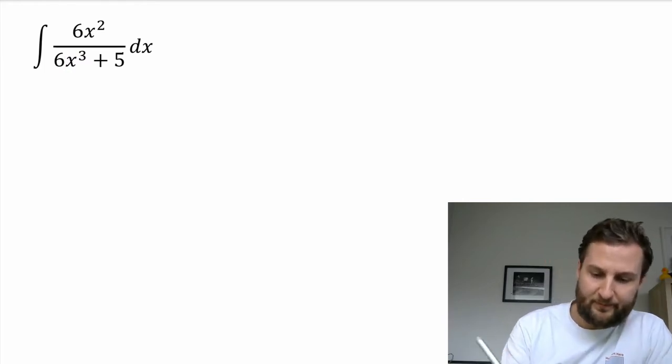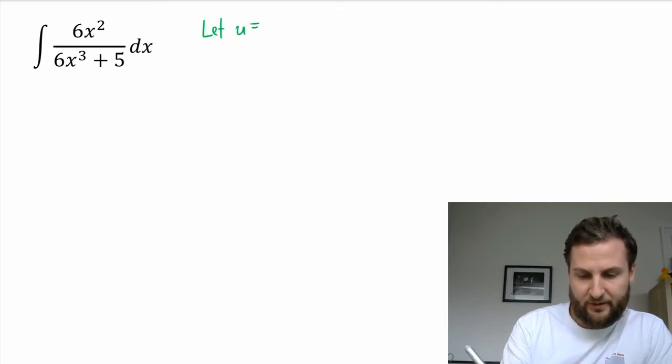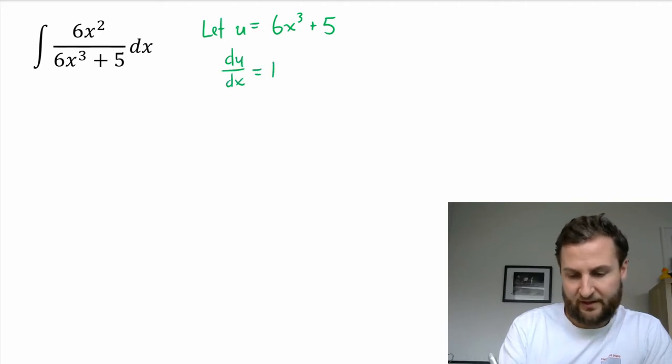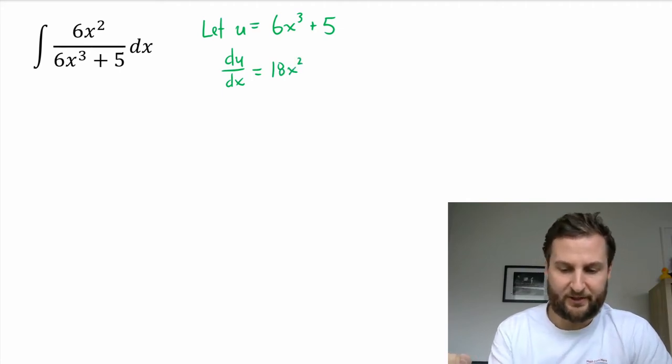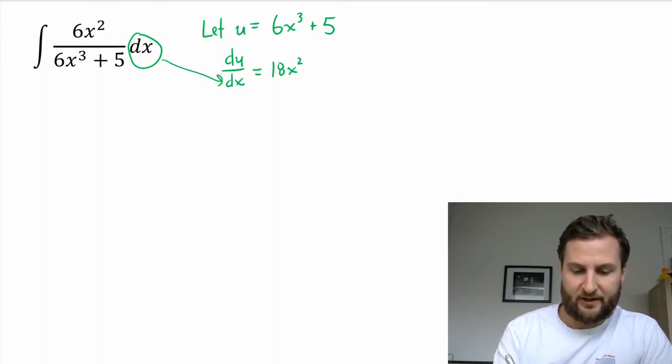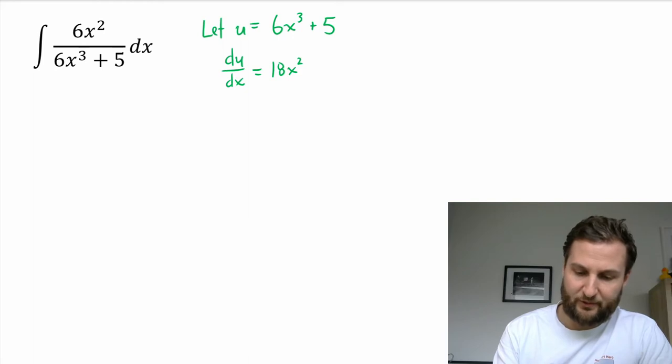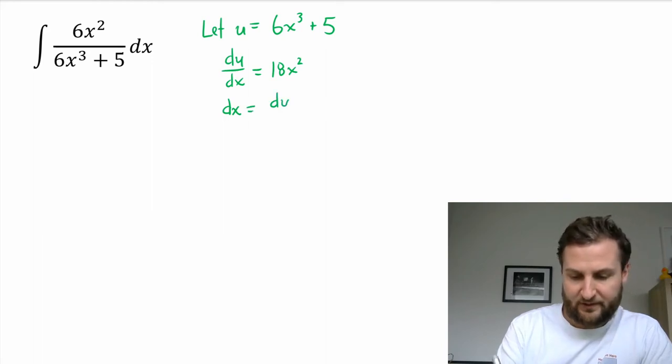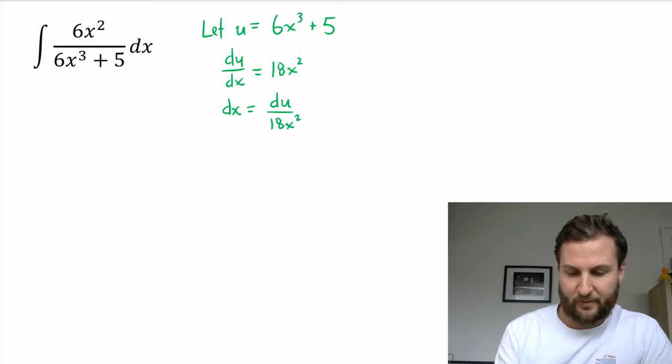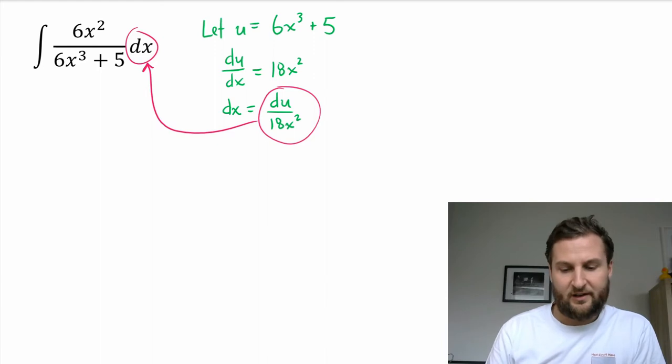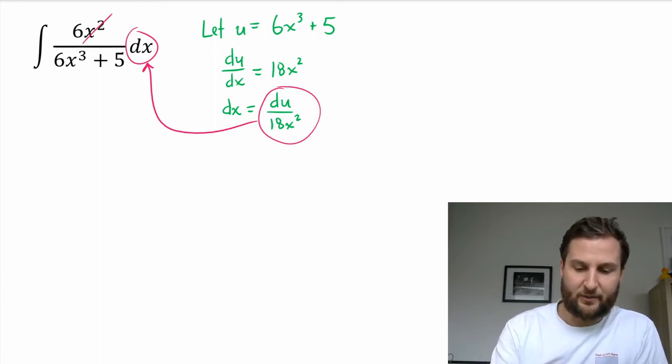I will let u equal the whole denominator, 6x³ + 5. Taking the derivative, du/dx is 18x² plus 0. Now I want to isolate for dx because I'm trying to replace dx. I can flip it and move the du to the other side, so dx equals du over 18x².